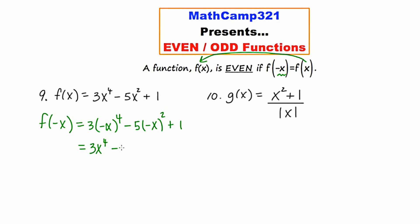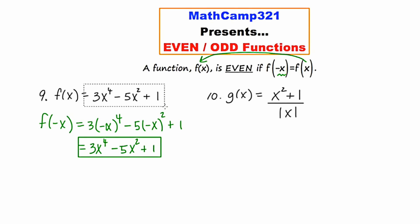And then we have minus five. Negative x squared would be negative x times negative x, which is x squared. And then plus one just gets rewritten as plus one. What I notice is that what I just wrote down is exactly the same as the original.